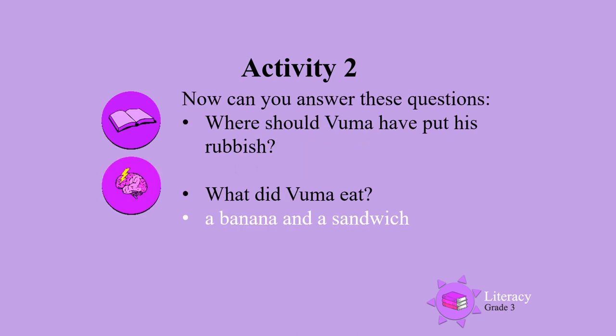Activity 2: now can you answer these questions? Where should Vuma have put his rubbish? Did you get that? In the bin. What did Vuma eat? I'm sure you got that one — a banana and a sandwich.